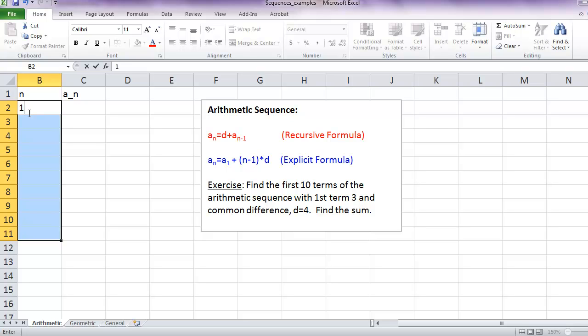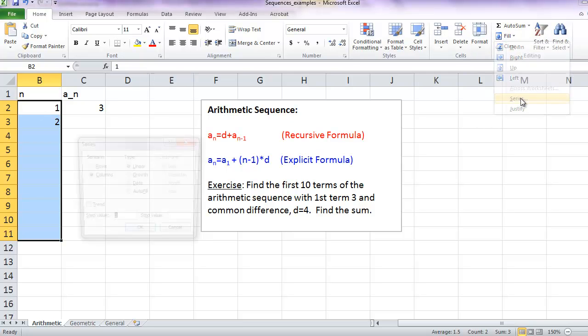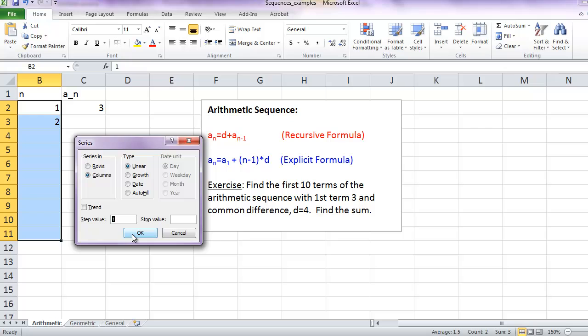For example, when the index is 1, when I'm talking about my first term, the value of the first term is 3. And in the second term, we'd have to do some calculations and so forth. To fill down the index column, let's go to fill series and we'll choose the step value of 1.